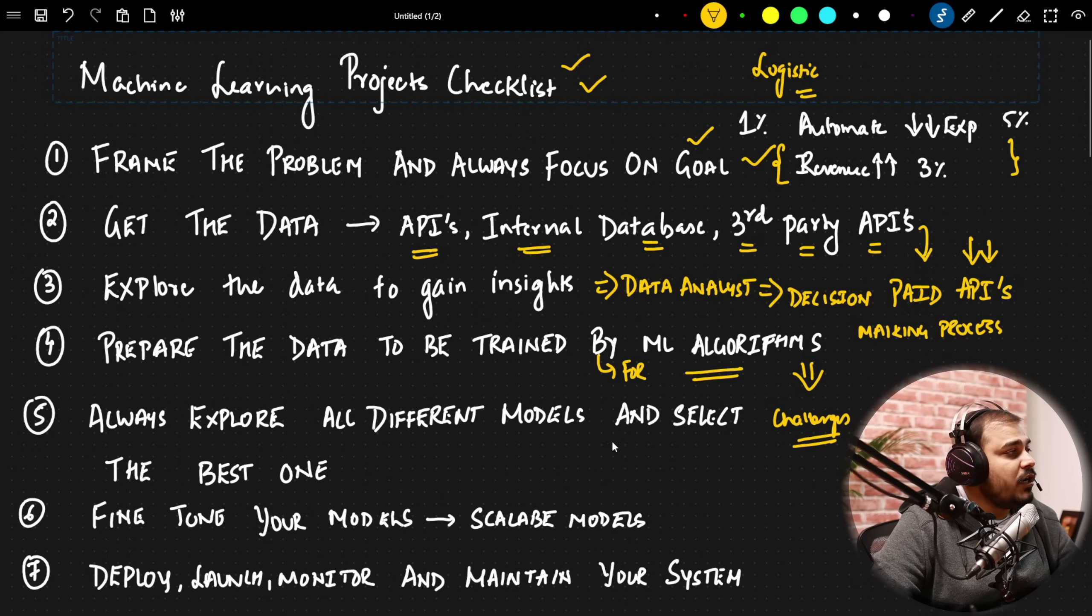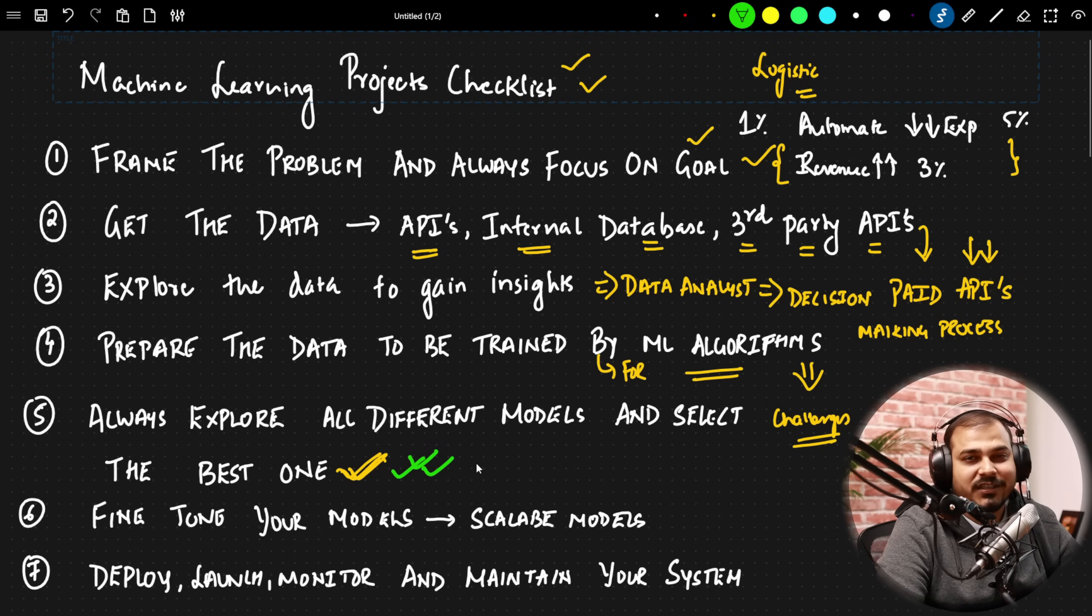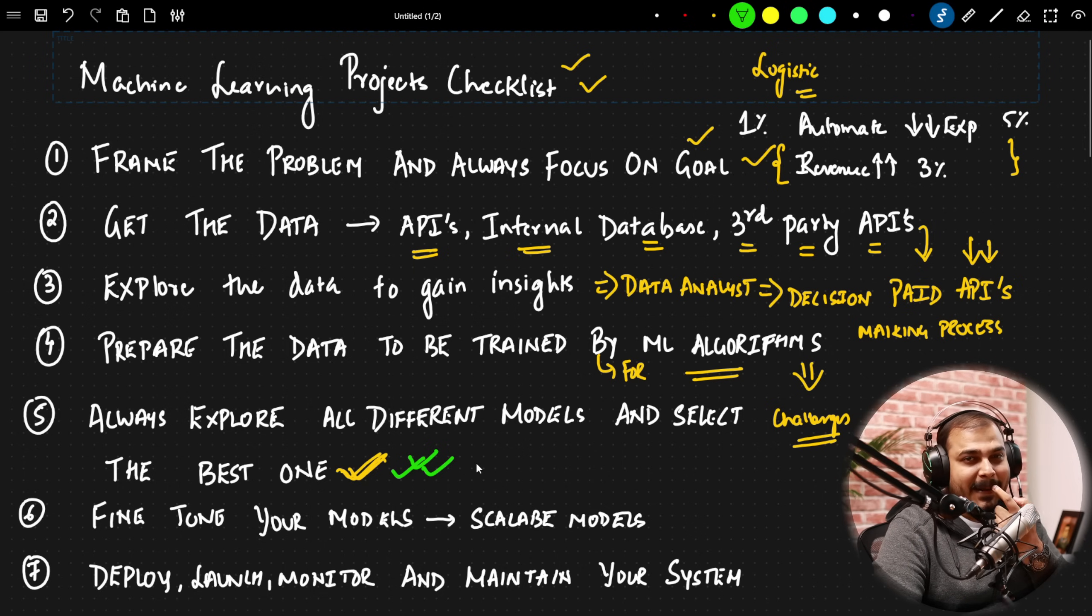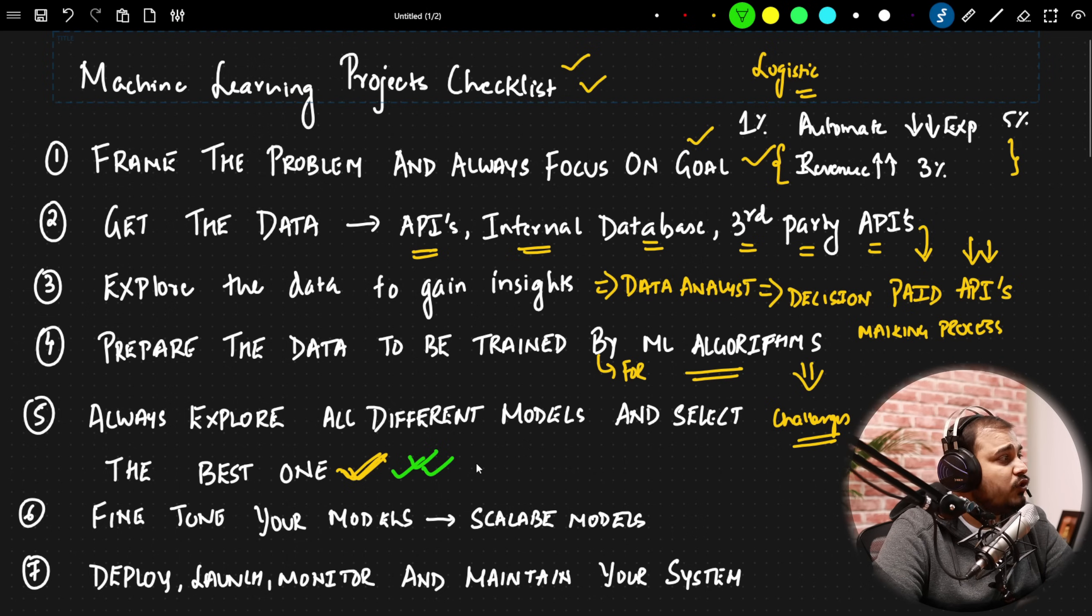Now coming to the next step: always explore all different models and select the best one. This is the most important thing, guys. Don't just directly select or say that I have just directly used Random Forest. No. An interviewer will definitely like to see what all things you have actually tried. And probably they may also ask you which is your favorite algorithm. And did you implement that entire machine learning project with that algorithm? No. You should try all the available algorithms that are available over there. And whichever gives you the best performance, that should be taken care of. And with the help of that, only your model should be selected. In the later stages, when the data set is getting changed, obviously, your model will also get changed. So just don't be dependent on one model.